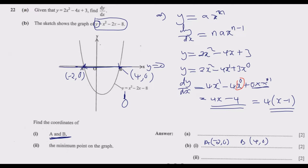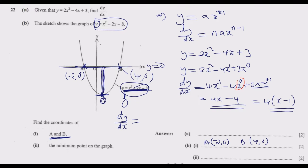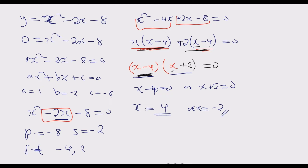Then we go to part c: find the minimum point on the graph. The minimum point is the turning point. At the turning point, the gradient of the curve is equal to 0, and the gradient is given by dy/dx. So we need to find the value of x at which dy/dx equals 0. We differentiate the function, solve for x, then substitute back to find y.